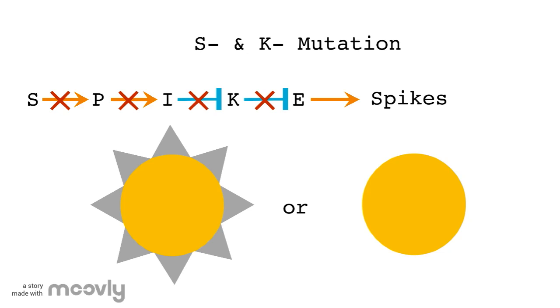In this mutant, however, the K gene is dysfunctional, meaning the E gene, and therefore the formation of spikes, won't be inhibited, resulting in a spiked cell.